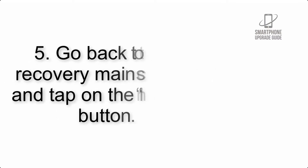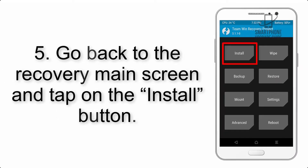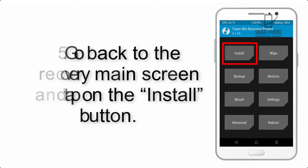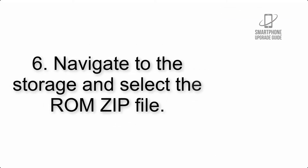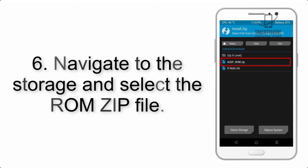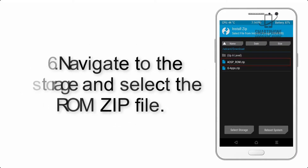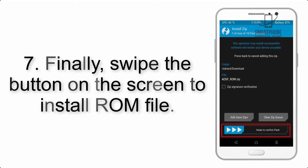Step 4: Swipe the button to wipe the device. Step 5: Go back to the recovery main screen and tap on the Install button. Step 6: Navigate to the storage and select the ROM zip file.